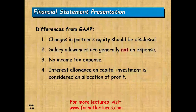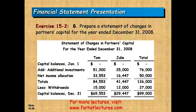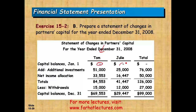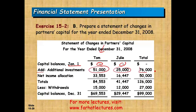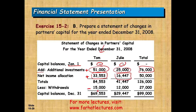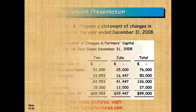This is the statement of changes in partners' capital for Tom and Julie from the prior session. They began with zero capital on January 1st, then Tom invested $51,000 and Julie invested $25,000 — a total of $76,000. Net income allocated: Tom received $33,553 and Julie $16,447. After subtracting withdrawals — Tom took $15,000 and Julie took $12,000 — the ending partnership capital balance is $99,000.